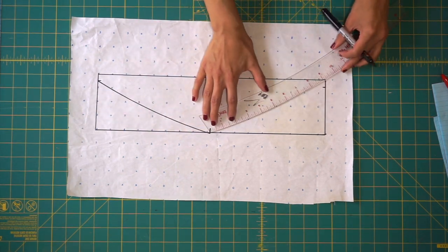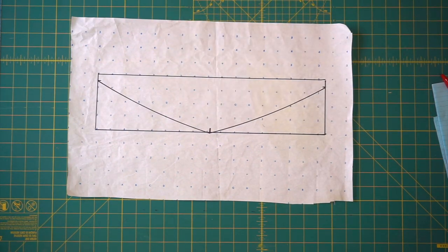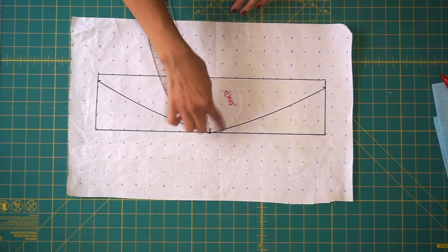Next you want to neaten that point that it comes to. You want it to be a little bit more round. You can freehand this or just grab another ruler and round off that top point.